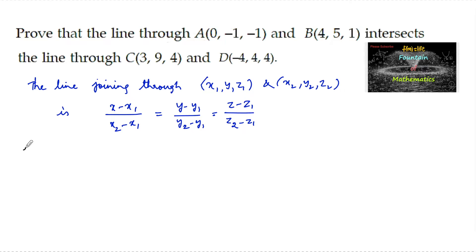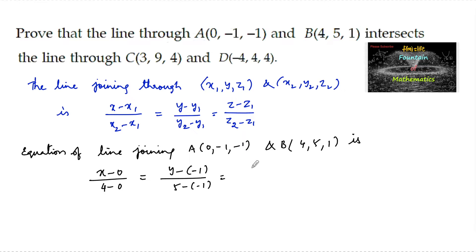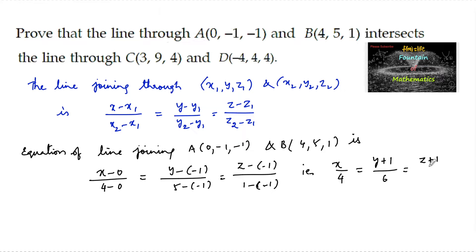Equation of the line joining A(0, -1, -1) and B(4, 5, 1) is: (x - 0)/(4 - 0) = (y - (-1))/(5 - (-1)) = (z - (-1))/(1 - (-1)), which simplifies to x/4 = (y + 1)/6 = (z + 1)/2.